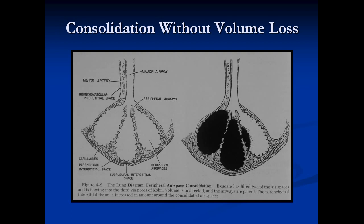This diagram illustrates airspace consolidation without volume loss. On your left you can see a normal airway going down into peripheral air spaces, with fine interstitial tissue around them and fine capillaries where oxygen exchange takes place — where oxygen goes into the small blood vessels and carbon dioxide comes out. There are also interstitial spaces: the bronchovascular interstitial space and the subpleural interstitial space, both of which are important in pulmonary edema.